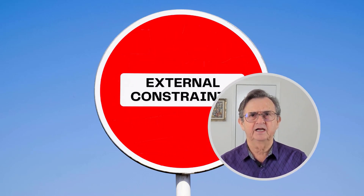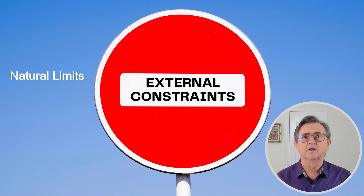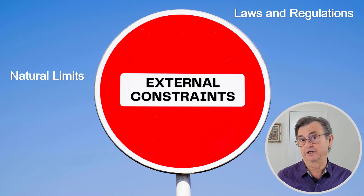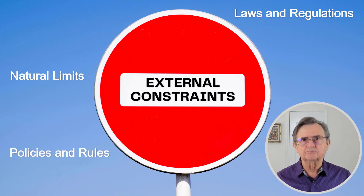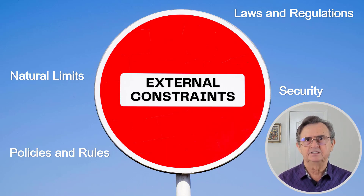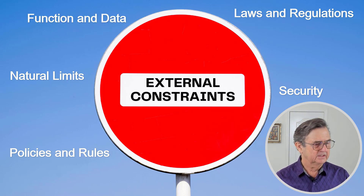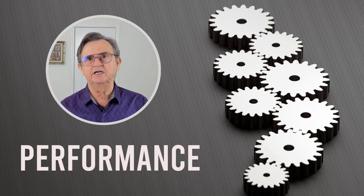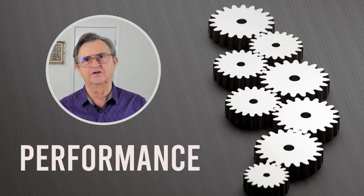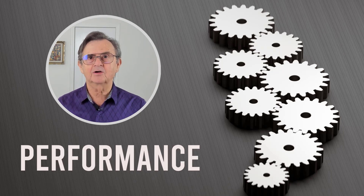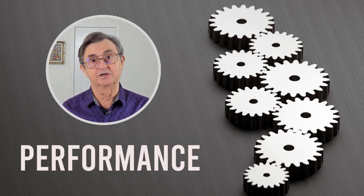Examples of external constraints include natural limits — things enforced by nature — laws and regulations enforced by external agencies like governments, policies and business rules enforced by the organization, security about limiting access and protecting data, and distribution of function and data. All of these are in the performance category as well. There are constraints to speed and efficiency of the application and the entire business solution. The main problem with performance is not the difficulty in achieving it, but the cost of measuring it. Modern applications can achieve amazing levels of performance if they are necessary and if the business community is willing to pay for them.